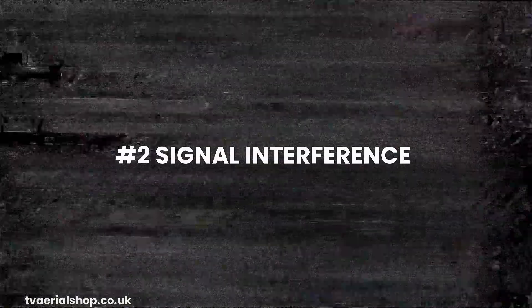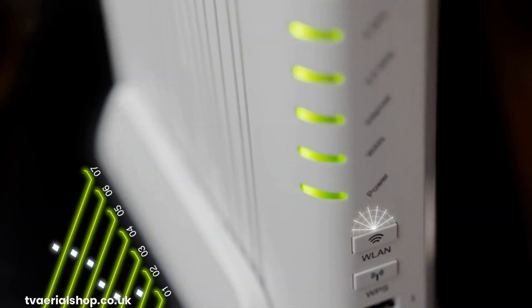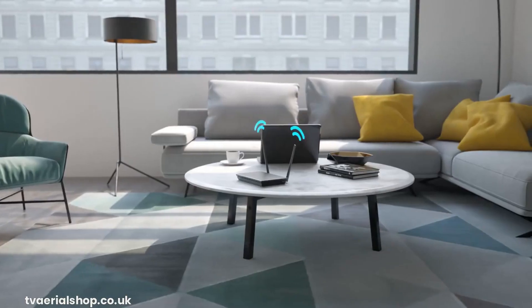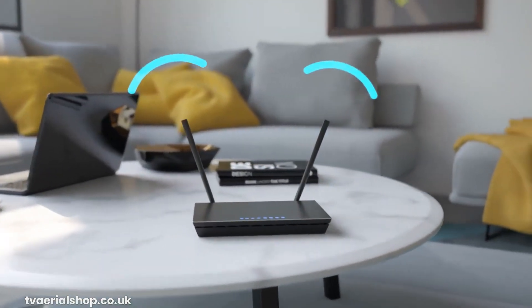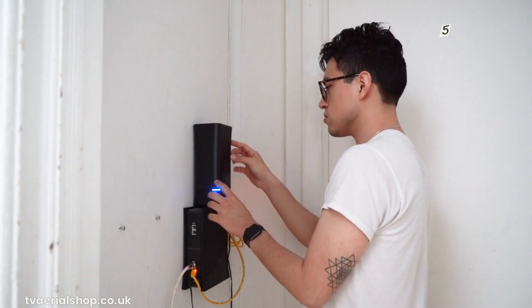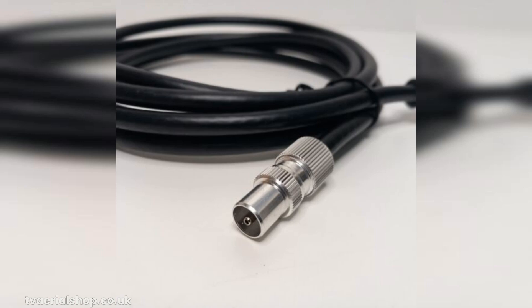Another cause of pixelation is signal interference. This interference can be caused by nearby electronics, such as Wi-Fi routers, cordless phones, or even appliances like microwaves, which can disrupt the TV signal. To mitigate signal interference, try moving any electronic devices away from your TV or antenna. If possible, relocate your Wi-Fi router to a different spot to minimize interference. Using shielded cables and filters can also help reduce signal disruptions. If you require a new cable, please visit TVAerialShop.co.uk, as they stock many types of cables for TV aerial and satellite.